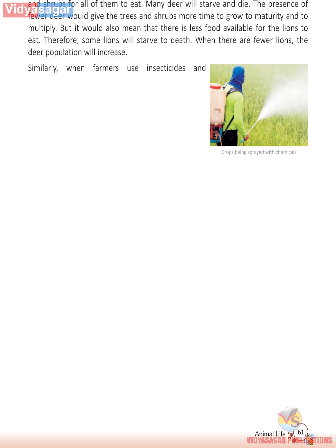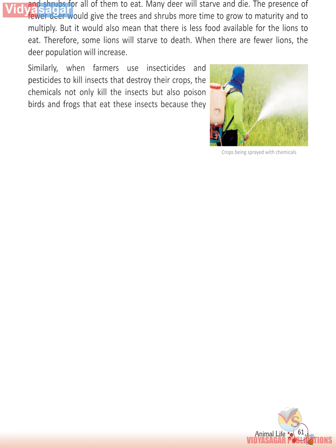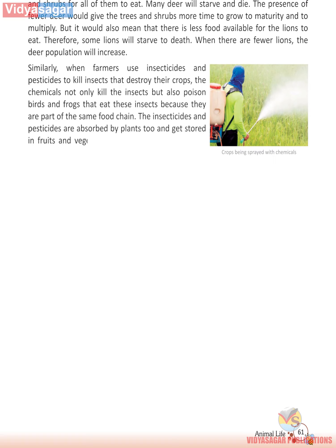Similarly, when farmers use insecticides and pesticides to kill insects that destroy their crops, the chemicals not only kill the insects but also poison birds and frogs that eat these insects, because they are part of the same food chain. The insecticides and pesticides are absorbed by plants too and get stored in fruits and vegetables. When we eat these fruits and vegetables, our bodies also get poisoned.